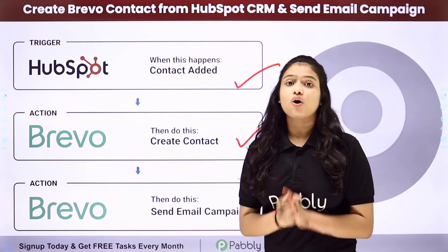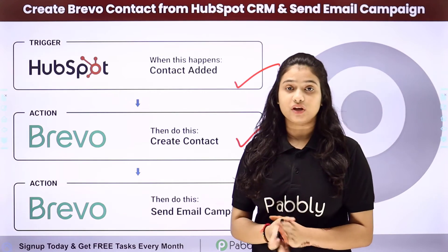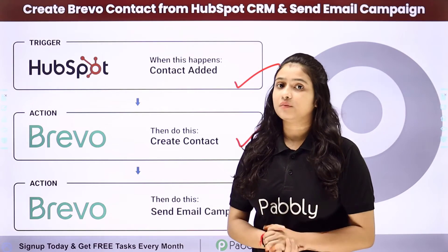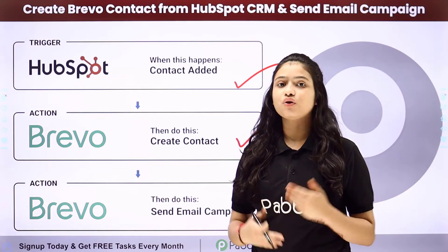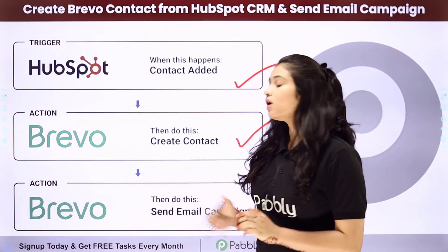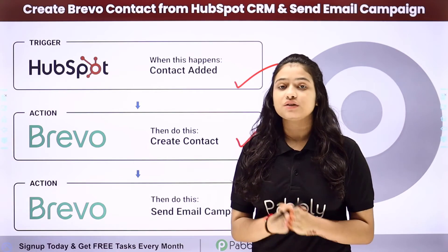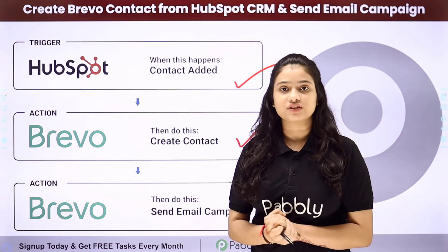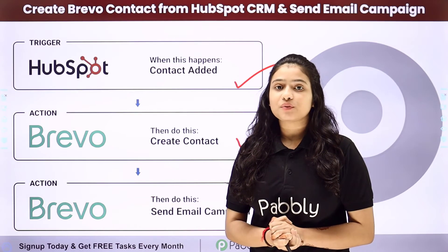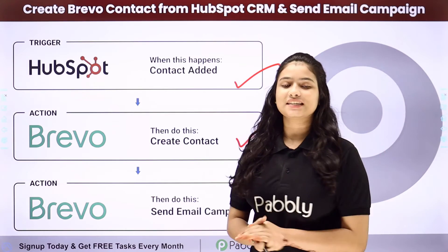We will be connecting all of them by using Pabbly Connect in such a way that whenever a new contact is added in my HubSpot CRM, automatically a new contact will also be added using the same details in my Brevo. And at last, an email campaign will be sent to the contact which is recently added, using Brevo only. So to learn the entire process step by step, let me take you all to my screen.